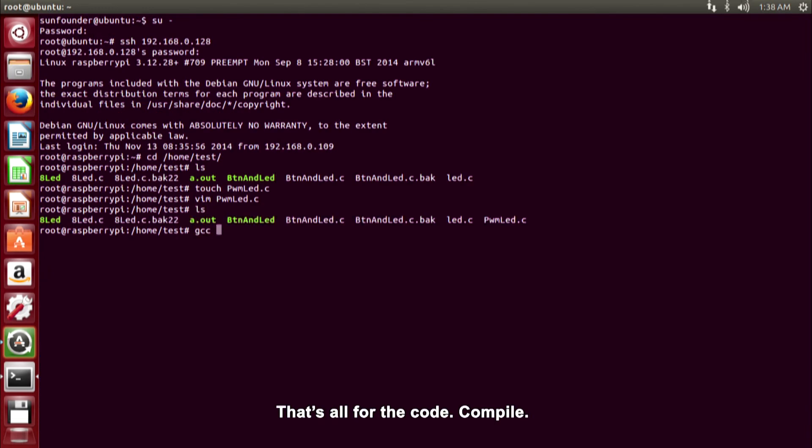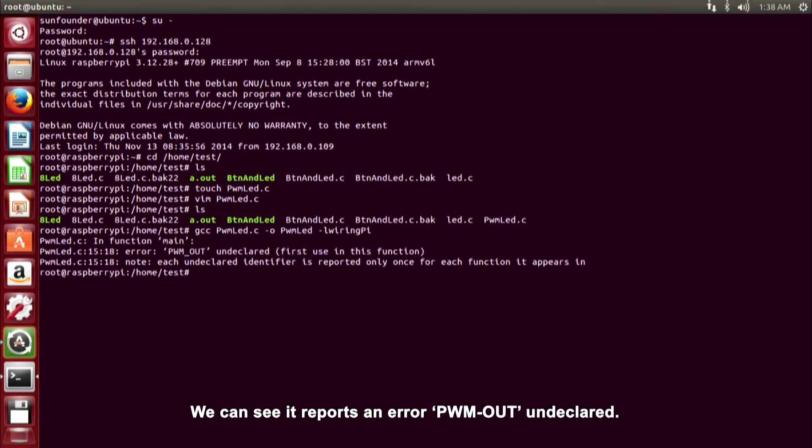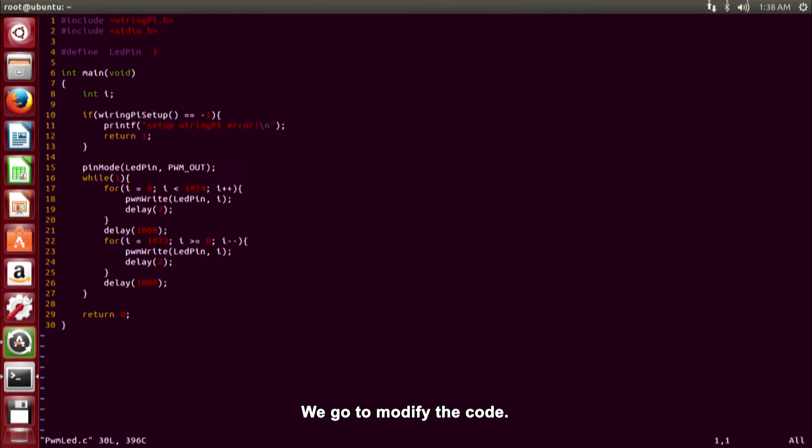That's all for the code. Compile. We can see it reports an error. PWM out undeclared. We go to modify the code.